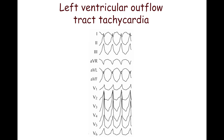Left ventricular outflow tract tachycardia is much less common than right ventricular outflow tract tachycardia. It is characterized by an early precordial transition in leads V1–V2. The exact origin of ventricular tachycardia can be determined only during electrophysiological study.